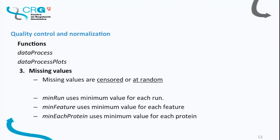Continuing with the data process functions, the third capability is dealing with missing values. In version three of MS-STATS we can decide whether to treat missing values as censored — assuming they are below the limit of detection — or as missing at random, meaning the peptide is not detected due to technical variability. If censored, we can impute the minimal value based on the minimum in the run, the minimum for that feature, or the minimum per protein.